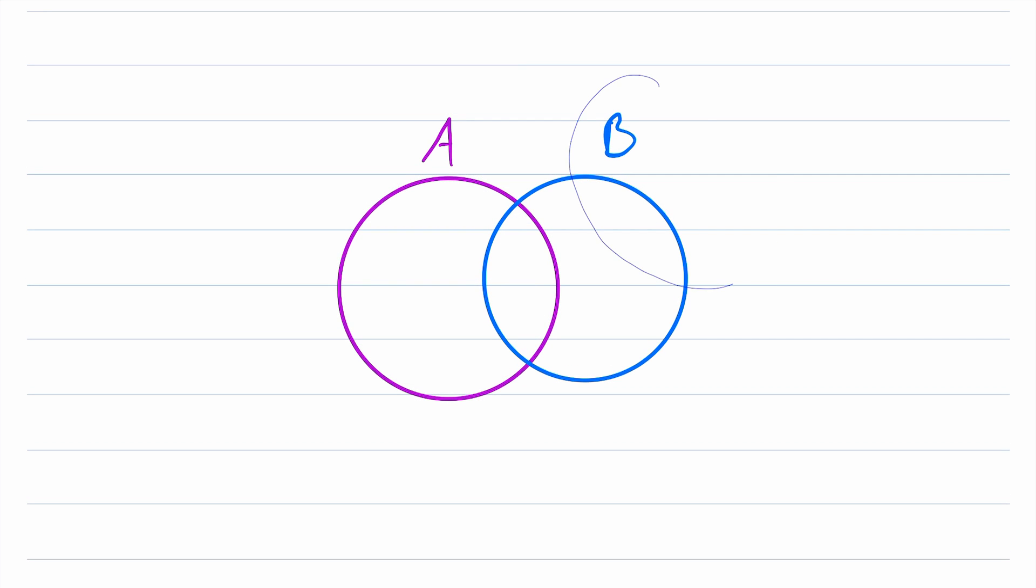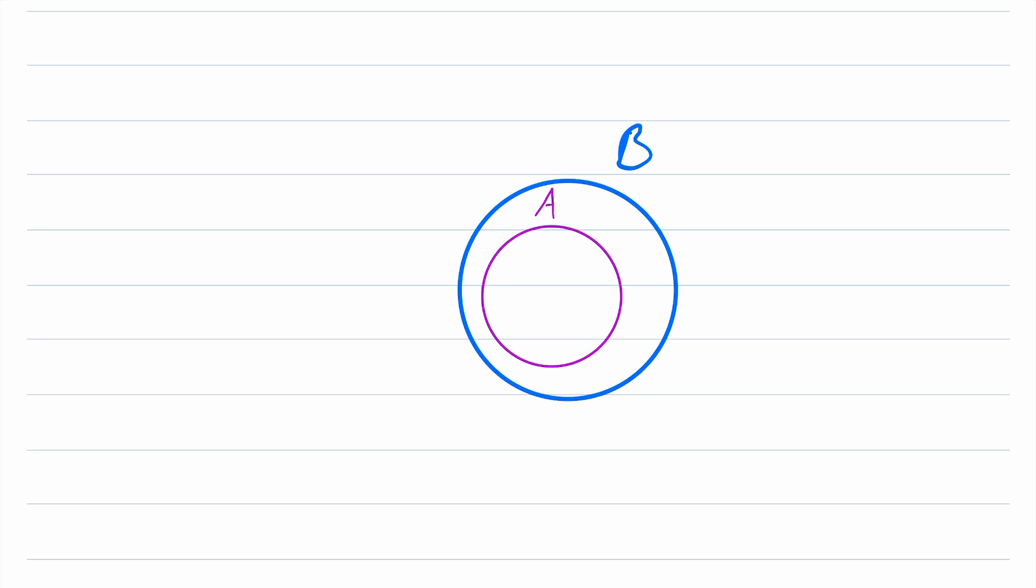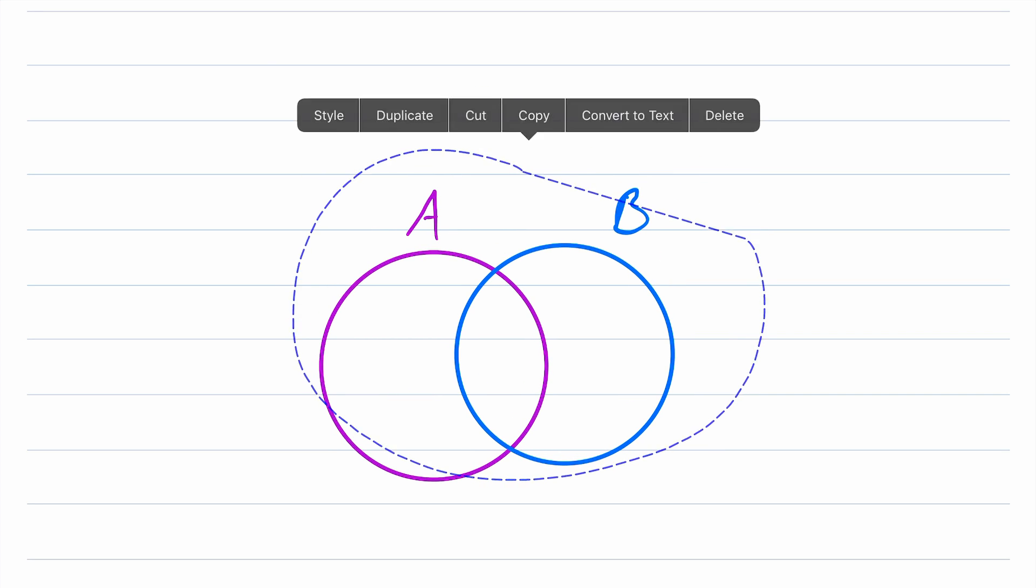The only other restriction for two sets to be overlapping sets is that they cannot be subsets of each other, so neither set can exist entirely within the other set. B cannot exist entirely within A, and A cannot exist entirely within B, which also means that overlapping sets cannot be equal. So let's go ahead and jot that definition down.